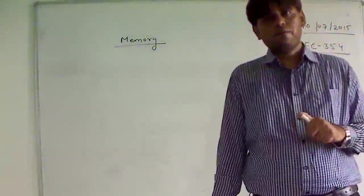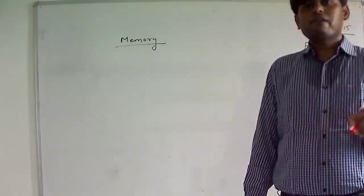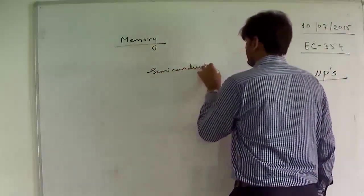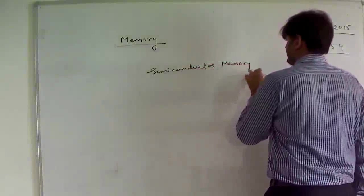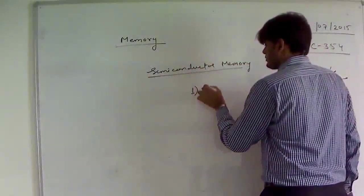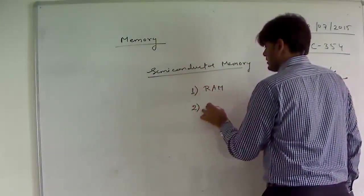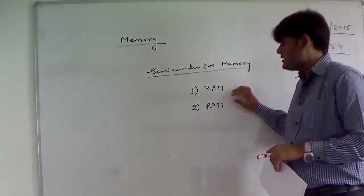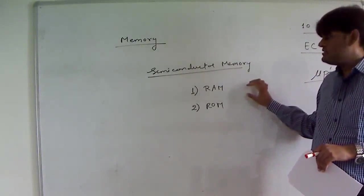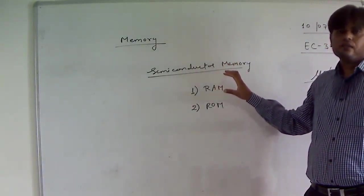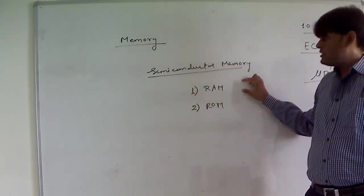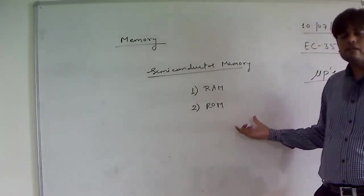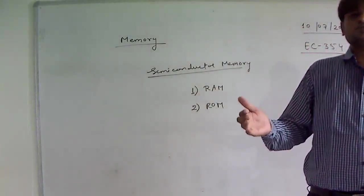For a computer there is cache memory, primary memory, and secondary memory. As far as the microprocessor-based system is concerned, we have semiconductor memory. There are two types of semiconductor memory: the first one is RAM and the second one is ROM. RAM stands for random access memory — it is a volatile memory used for the temporary storage of data during programming. ROM is read-only memory — it is a non-volatile memory used for the permanent storage of programs.